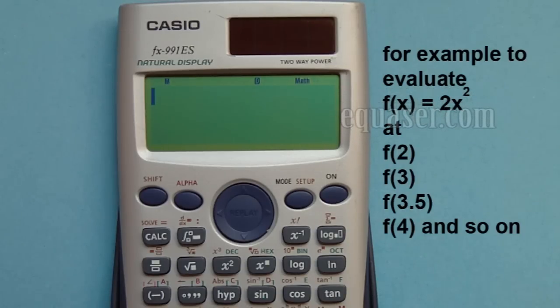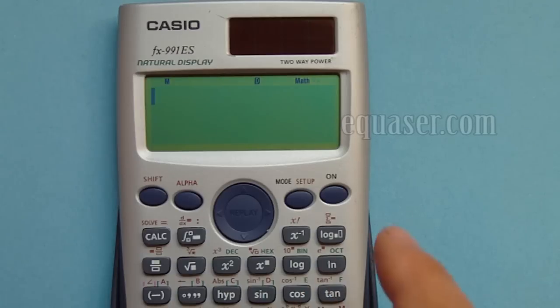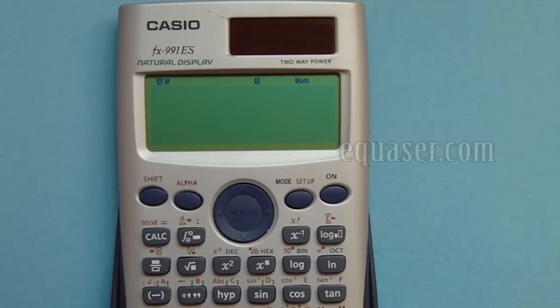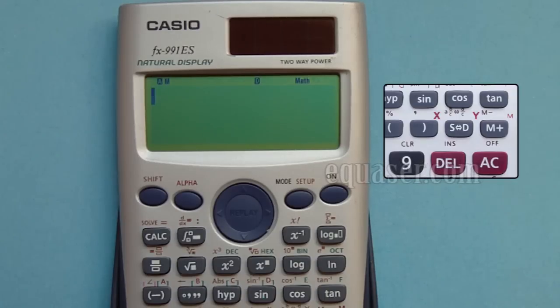So how can we do it? Let's assume we have an equation. I press alpha and I press Y. All these letters A, B, C, D, X, Y can be used as variables.